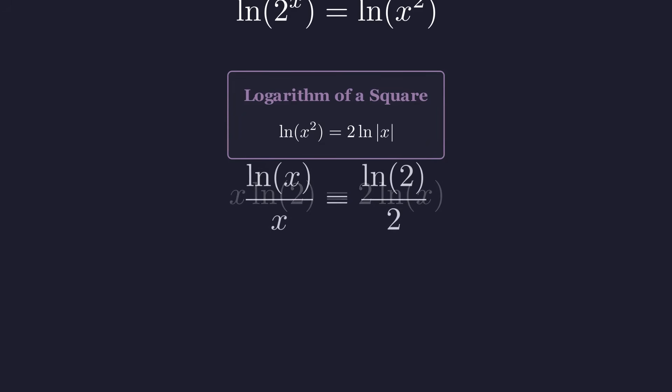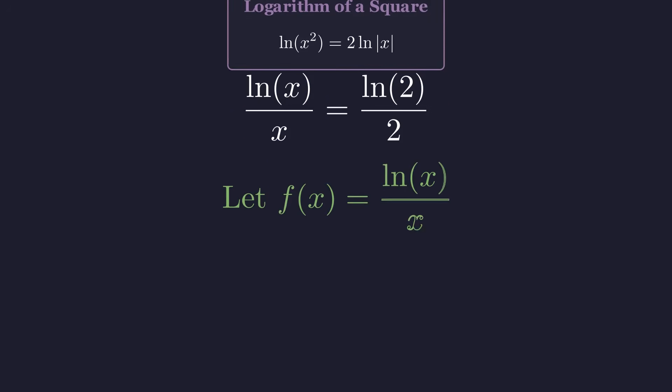We now have a function on one side, the natural log of x divided by x, and a constant on the other. This suggests we should study this function more carefully. Let's give this function a name, we'll call it f. The solutions to our original equation are simply the x values where this function equals our constant. To understand how this function behaves, we need to look at its derivative.